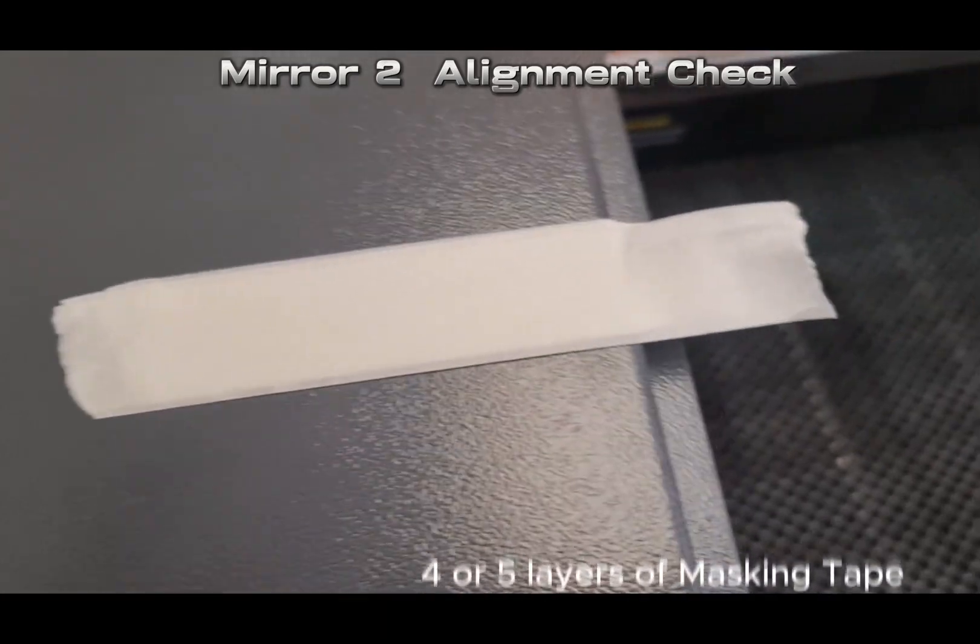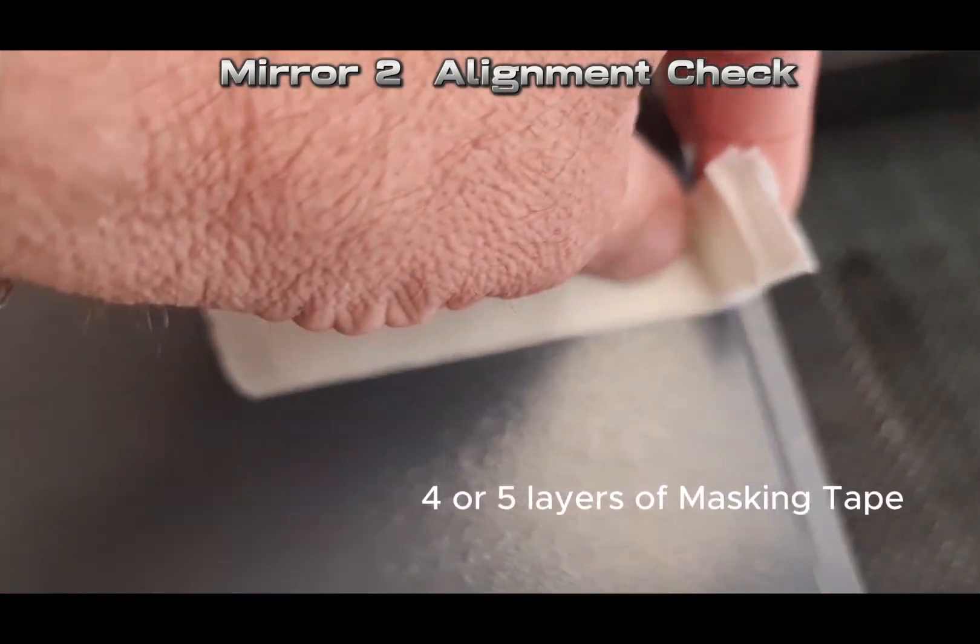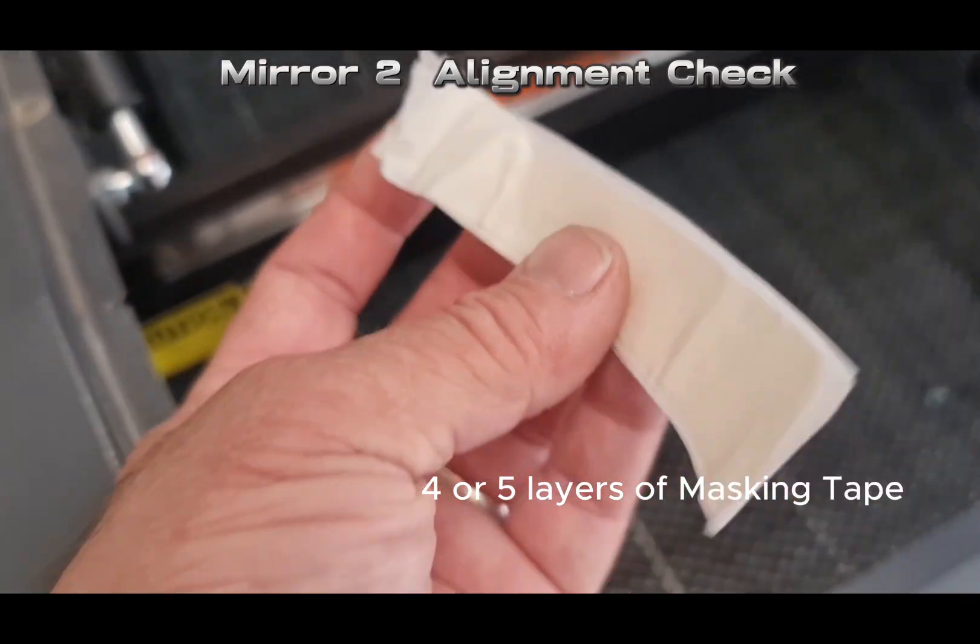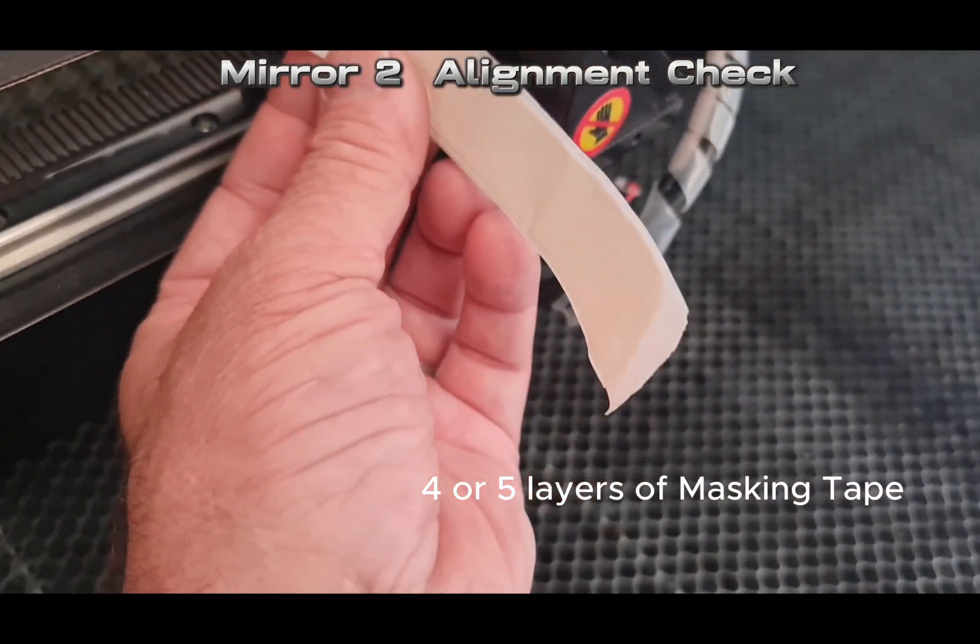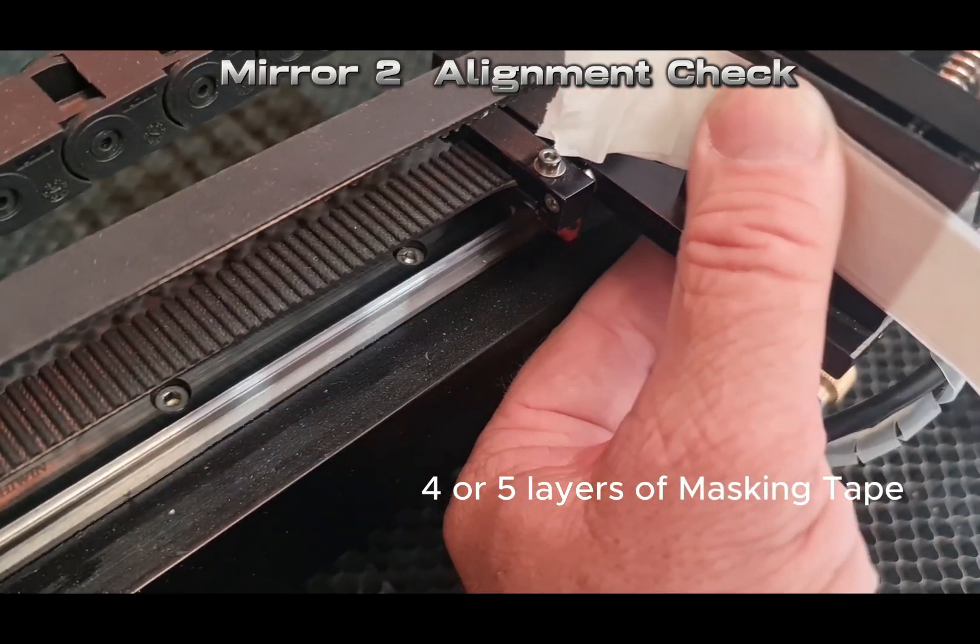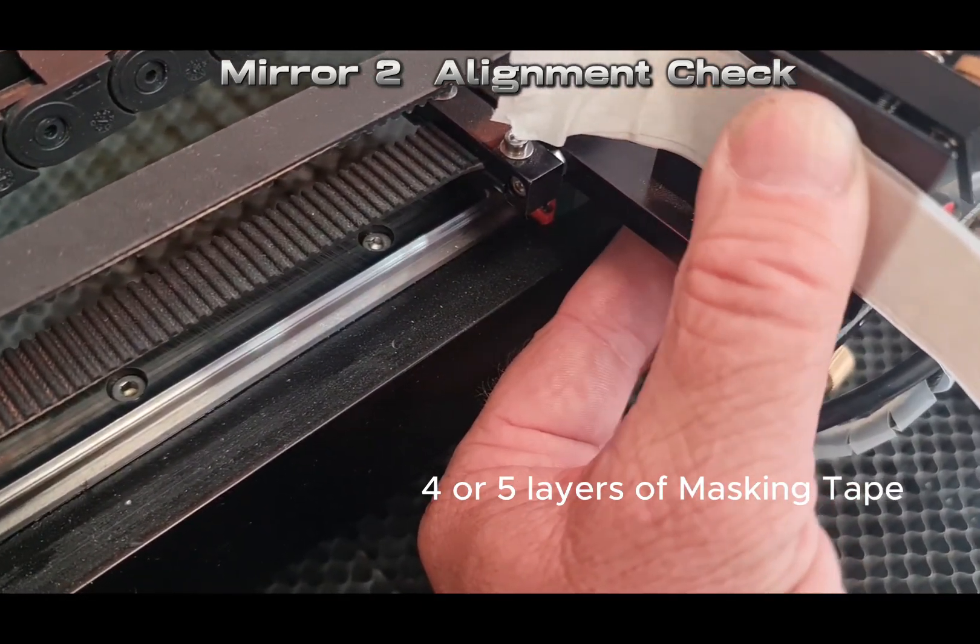Next we're going to get four or five layers of masking tape on top of each other. The reason for this is so when we fire the laser we don't want to burn through the tape and dirty the mirror behind it from the glue on the tape.